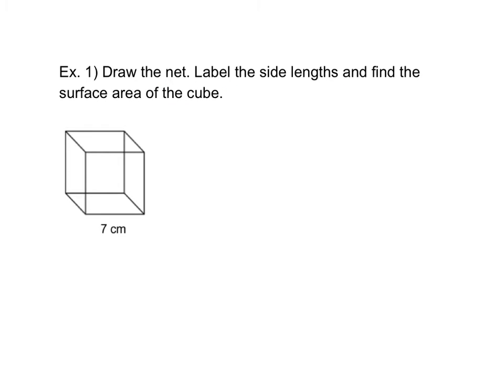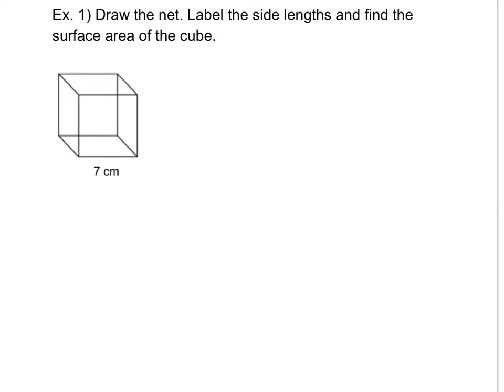So the first question here, we have a cube and it says draw the net, label the side lengths and find the surface area of the cube. As it turns out cubes are very easy to do because all the side lengths are the same. What I always do when I'm drawing these shapes I always draw the piece that's sitting on the floor first. If you imagine that this is sitting on the floor or on a table this piece here is the one that's actually in contact with the table. So I'm going to draw that first.